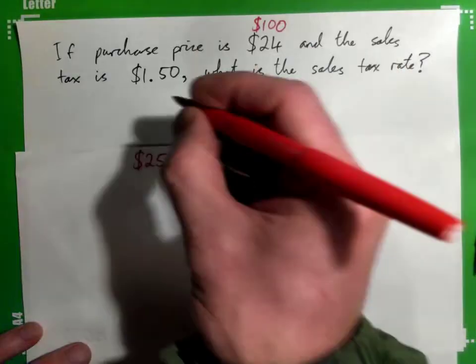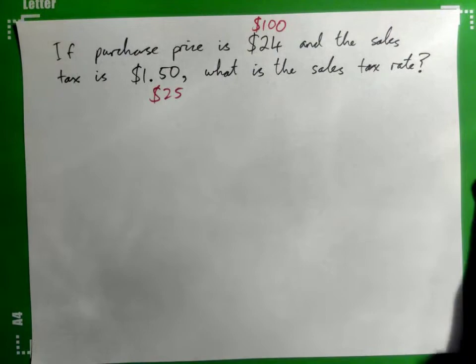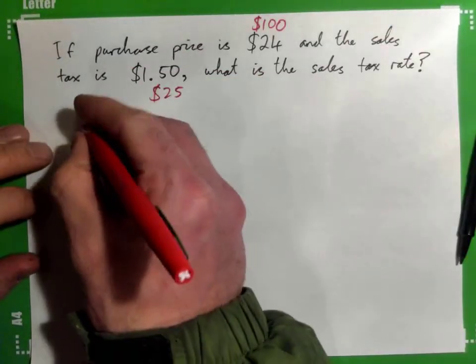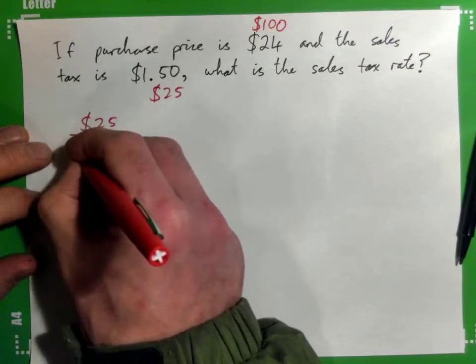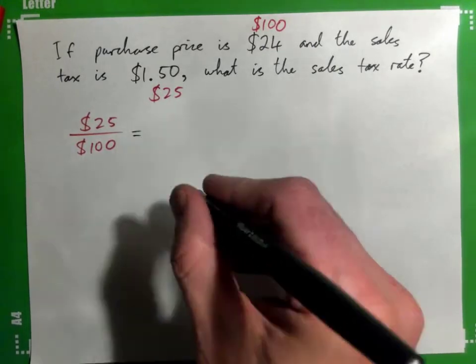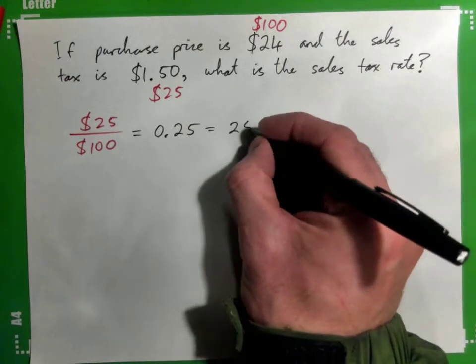Right. It would just be 25%. And to get that 25%, we could take that and divide by that. And that would give us the 25%, because that would be 0.25, which is 25%, right?